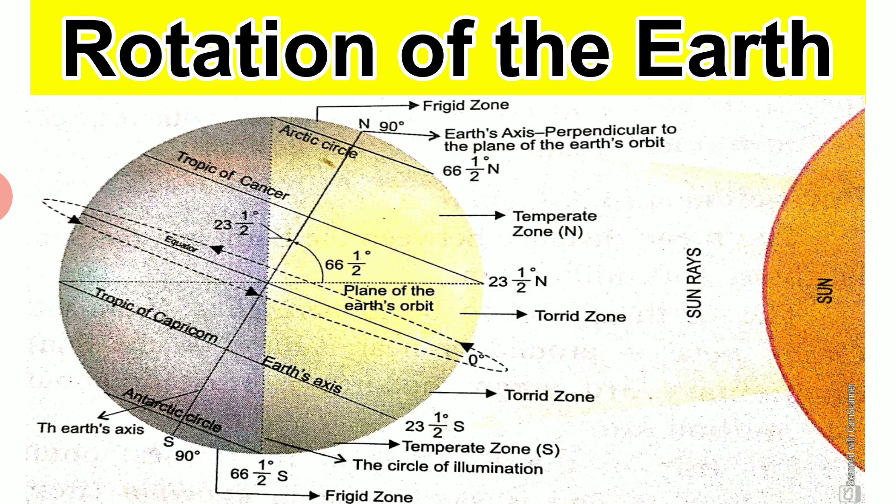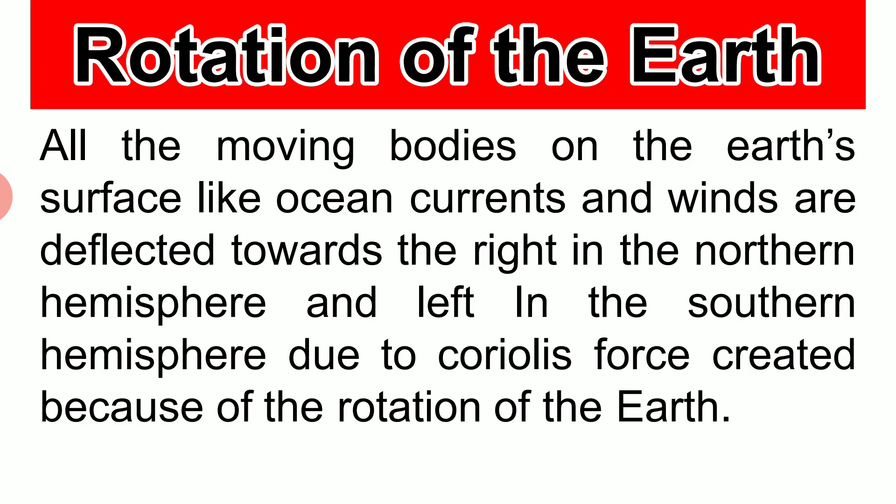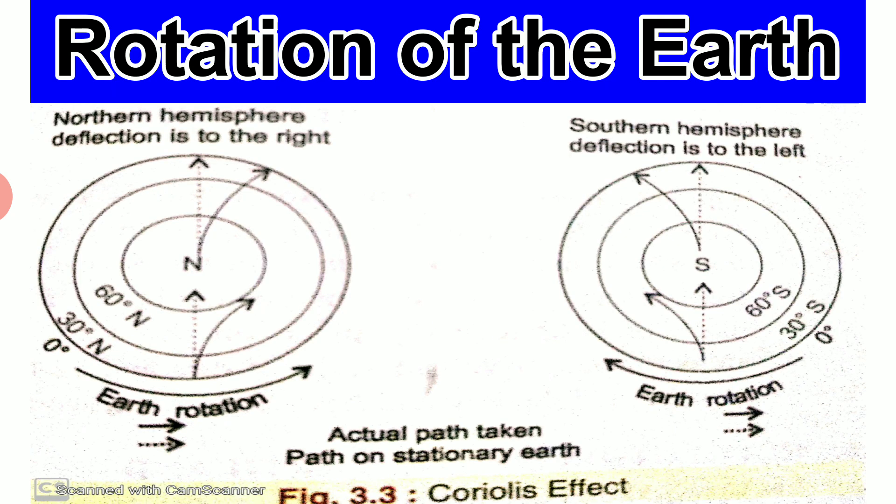The varying length of day and night is directly related to the earth's rotation on its axis once in 24 hours. All the moving bodies on the earth's surface, like ocean currents and winds, are deflected to the right in the northern hemisphere and to the left in the southern hemisphere because of the rotation of the earth and the difference in speed as we go towards the pole.